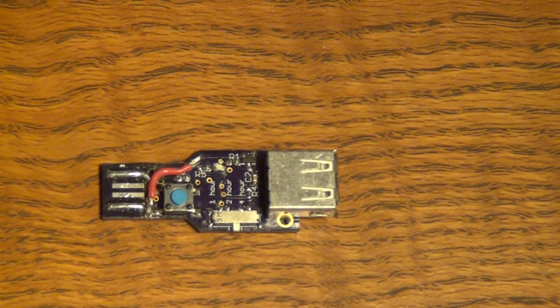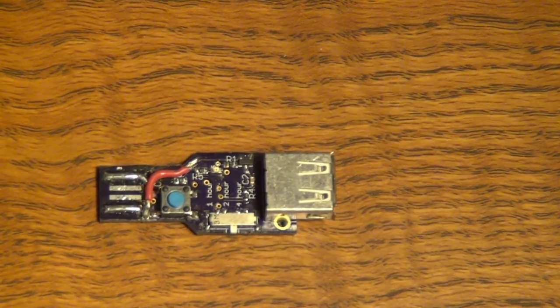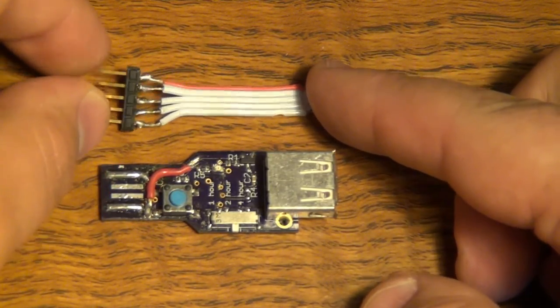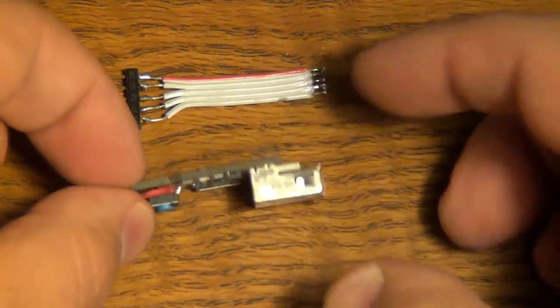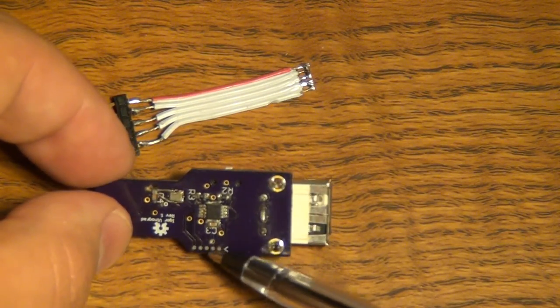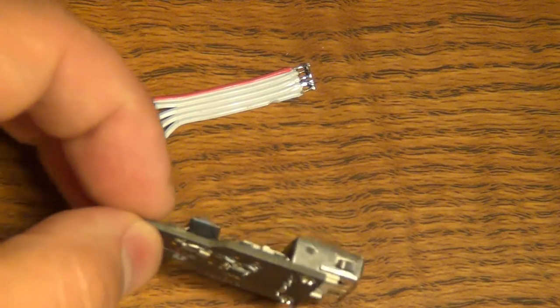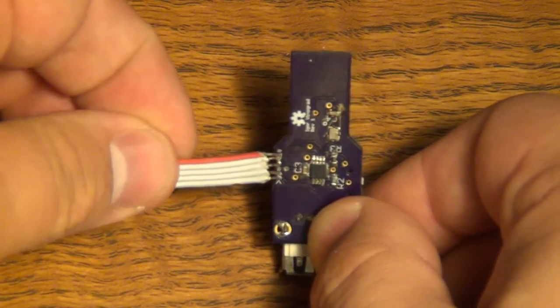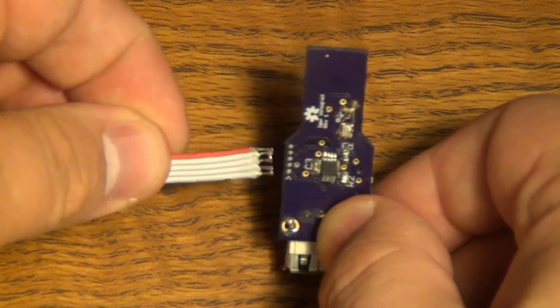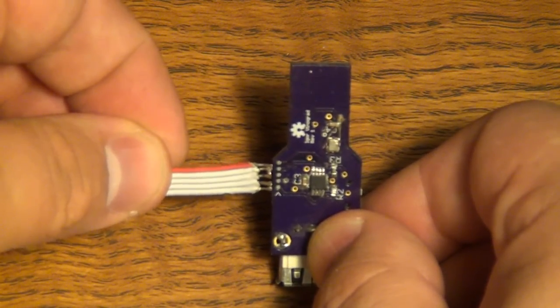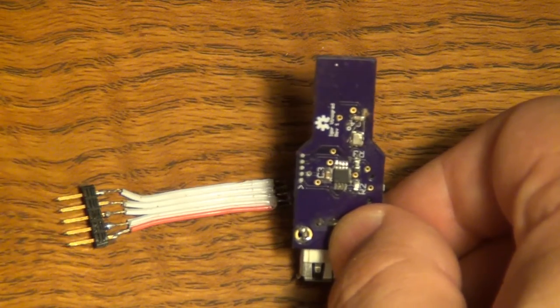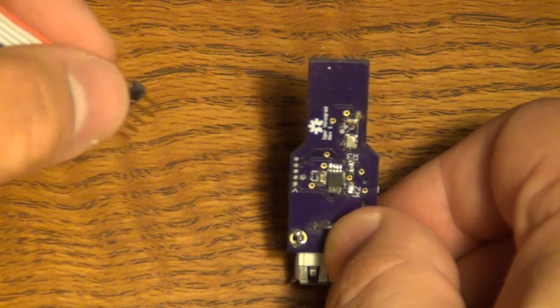Oh, what I forgot to mention, or what I forgot to show you was that here, this is the programming header that I was using. If you look on the back here, right here are those pads. And if you look carefully, those pads line up really nicely with the ribbon cable. Although this has been soldered on, so it looks kind of crappy right now. So those line up nicely. And then you plug the Pickit 3 right into this 0.1 inch header.